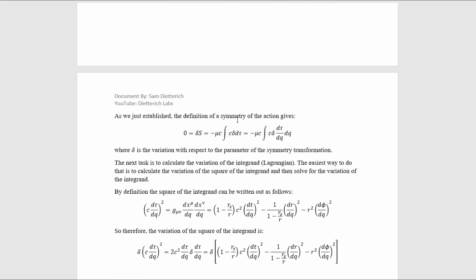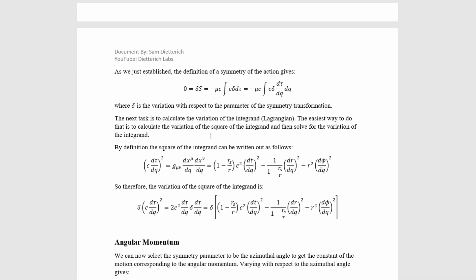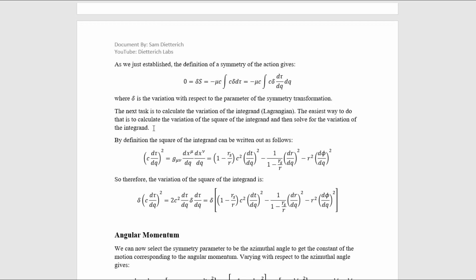As we just established, the definition of a symmetry is that this variation of the action with respect to the symmetry parameter is zero. The next task is to calculate the variation of the integrand, which is the Lagrangian. The easiest way to do this is to calculate the variation of the square of the integrand, and then solve for the variation of the integrand. That last step I'm going to save for when we're considering specific variations.